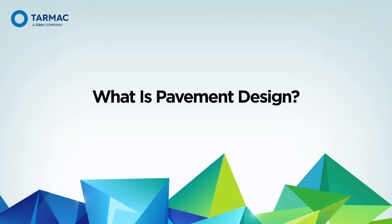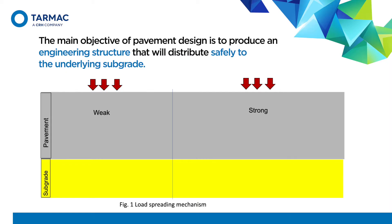So to start with, what is the function of pavement design? The pavement design objective is to provide a structure able to distribute the load safely to the underlying subgrade, as well as providing riding quality. If we have a weak pavement and a strong pavement on a typical subgrade, when you apply loading on the weak pavement, the stresses generated in the subgrade will be very high, resulting in damages and distresses in the subgrade and consequently on the pavement itself.